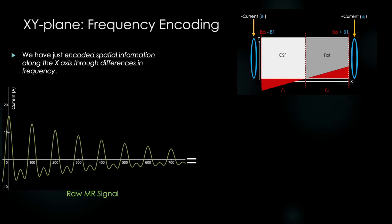We can't physically see those individual T2 decay curves, but we know they are there, buried somewhere within this raw signal. And here's where the magic happens.